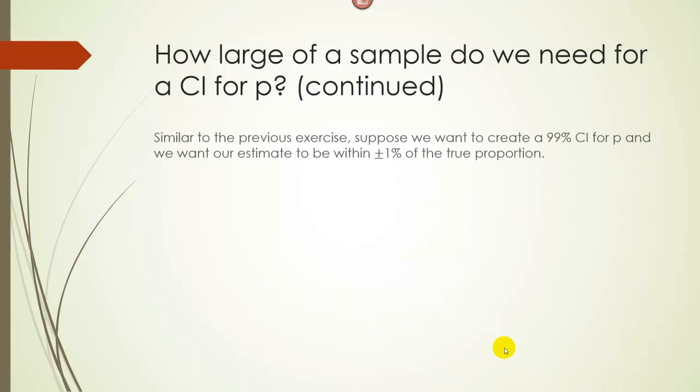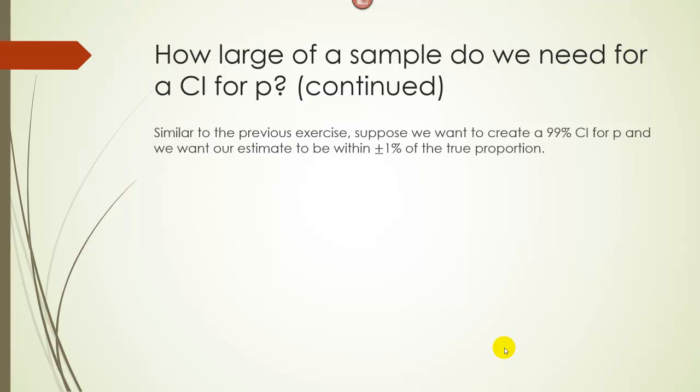Alright, so continuing this example, if we want to make our estimate within 1% of the true proportion, in other words our margin of error is 1%, well 1% is just 0.01, so our margin of error is 0.01. Since we want to do a 99% confidence interval, our z value is 2.575.